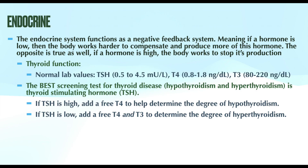The endocrine system functions as a negative feedback system. If a hormone is low, our body works extra hard to compensate and produce more of that hormone. The opposite is also true — if a hormone is high, our body works overtime to stop its production and maintain homeostasis.